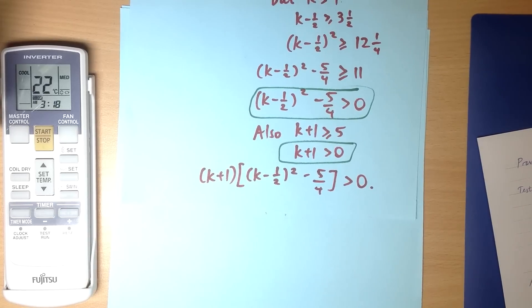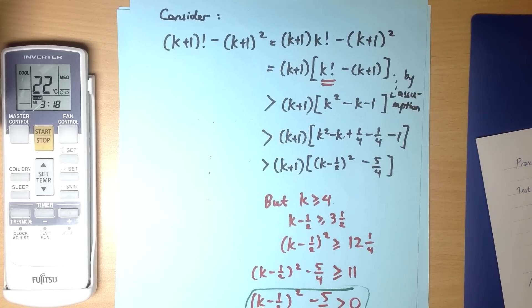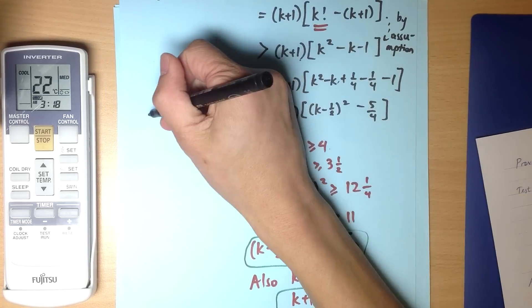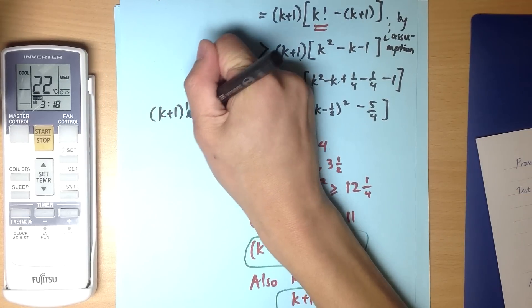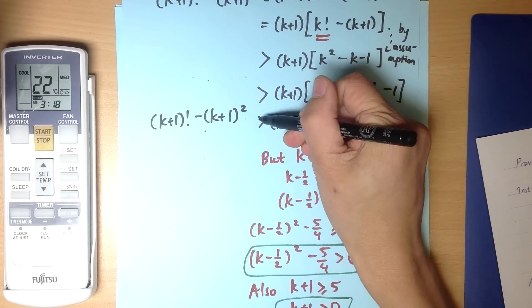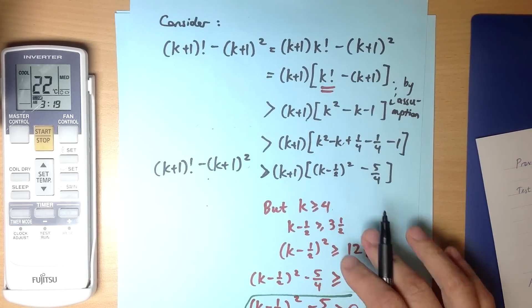See what I've done there? Now come back to the reason why I was talking about this. It's because what I have here is what I have here on the right-hand side, and that's (k+1)! - (k+1)², which is greater than this. So let's put it all together.